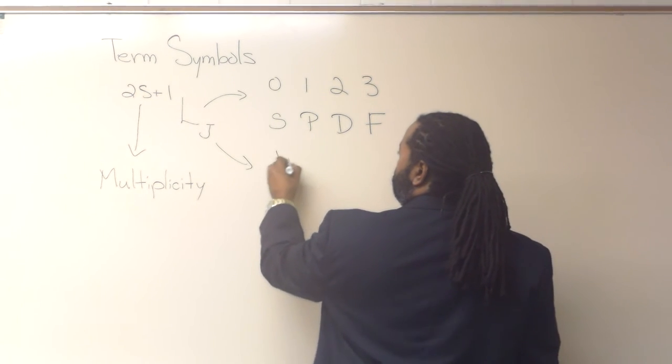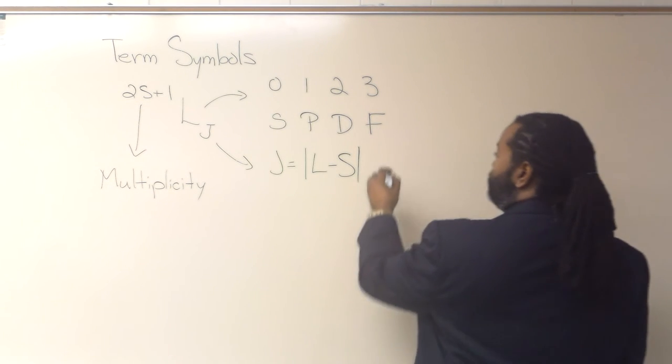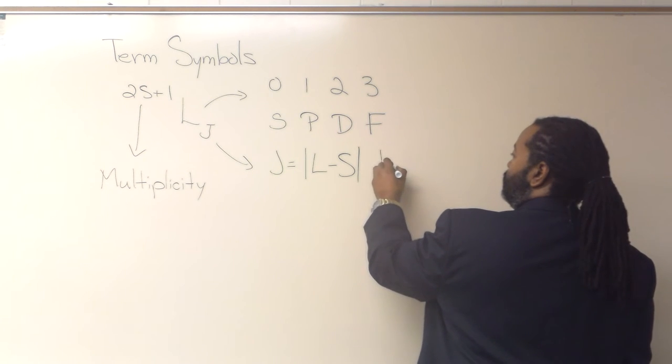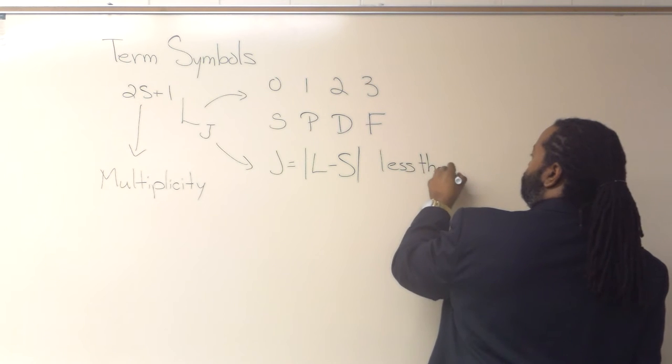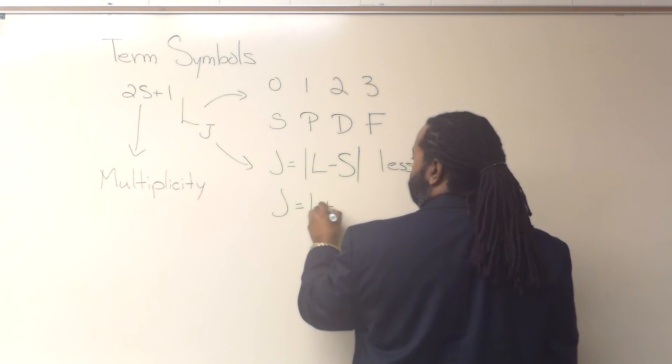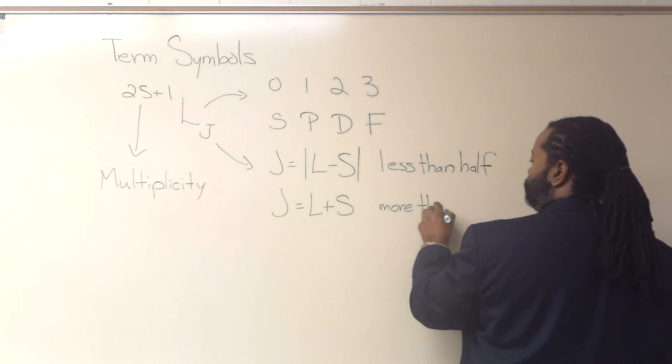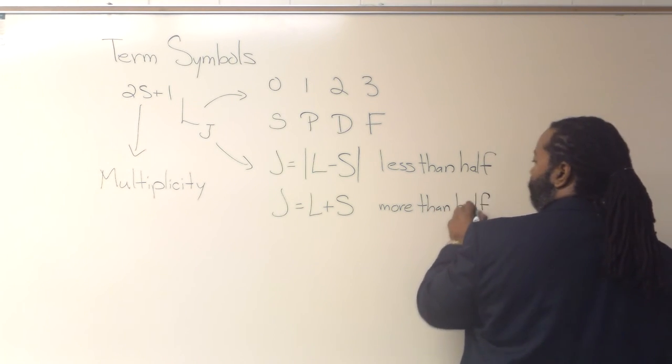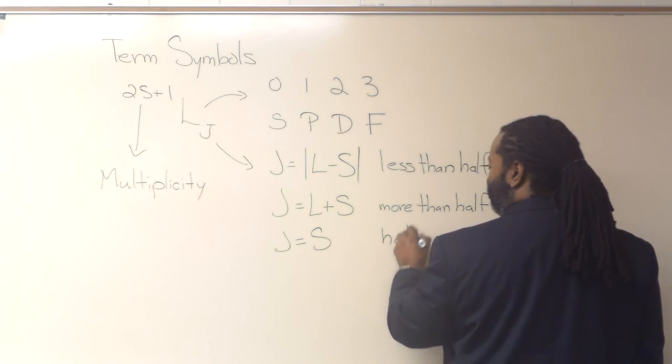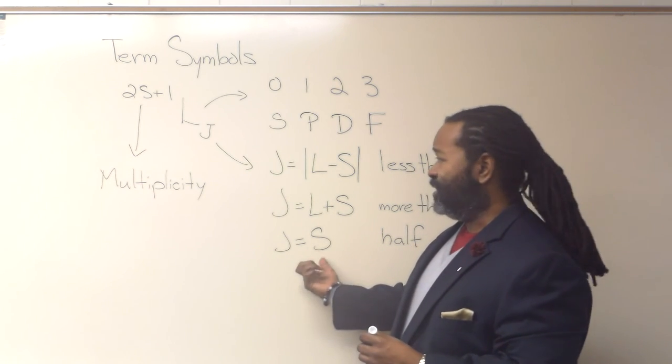And so in this case, we have three different setups. We can do the absolute value of L minus s if the orbitals are less than half full. We can take the sum of L and s if it's more than half. And j actually equals s if it's exactly half. And we'll get into a case where we can see all of these in play and why this ends up being true.